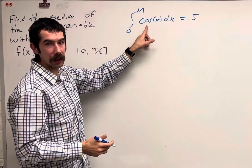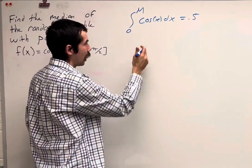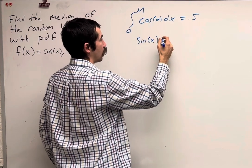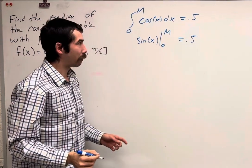Alright, so let's evaluate the integral of cosine of x, and then we should be able to find m. The integral of cosine of x is sine of x, and we want to evaluate it at 0 and m, and again it's going to be equal to 0.5.